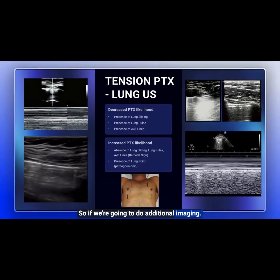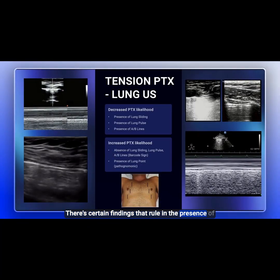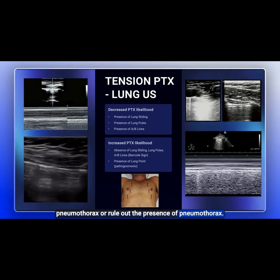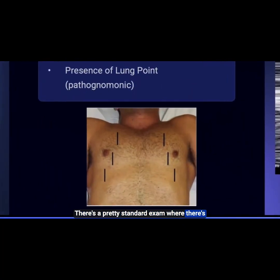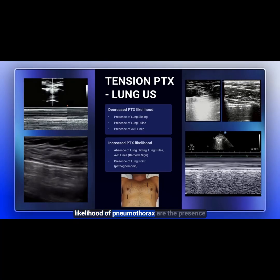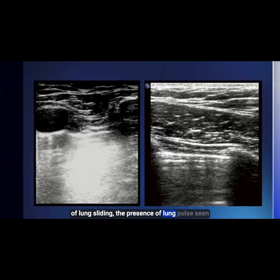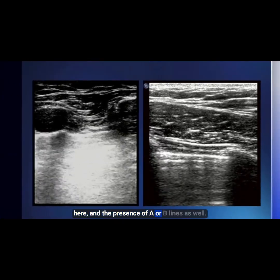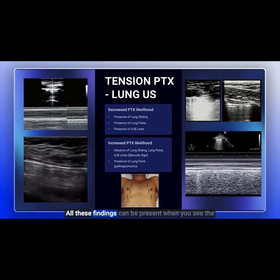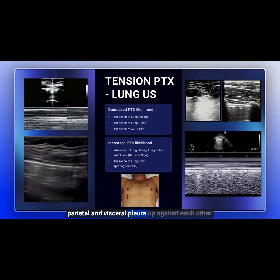If we're going to do additional imaging, how does it work with lung ultrasound? There are certain findings that rule in or rule out the presence of pneumothorax. There's a pretty standard exam with three different points on each side of the chest that you can look at with a linear ultrasound probe. Factors that will decrease the likelihood of pneumothorax are the presence of lung sliding, lung pulse, and A or B lines. All these findings can be present when the parietal and visceral pleura are up against each other.